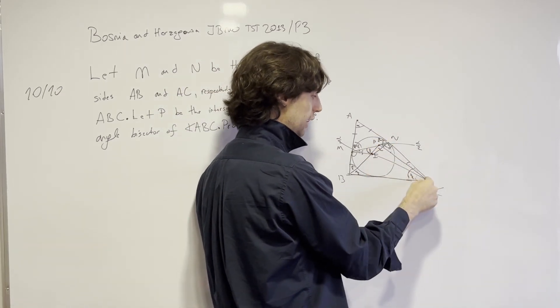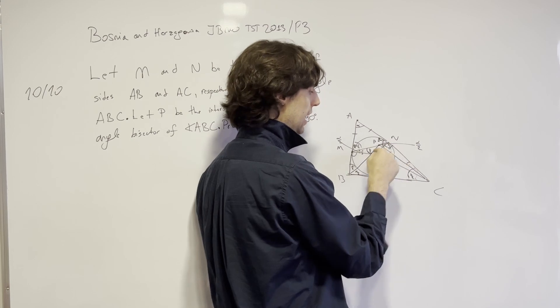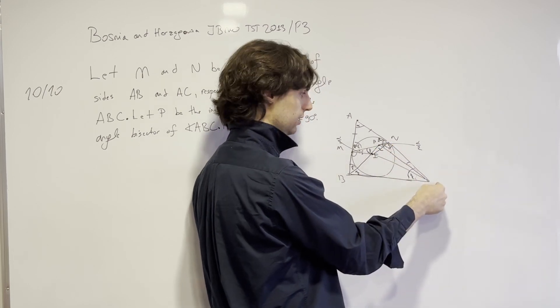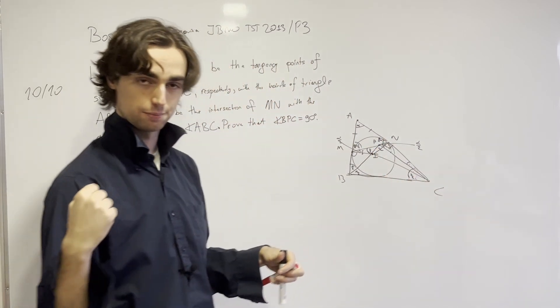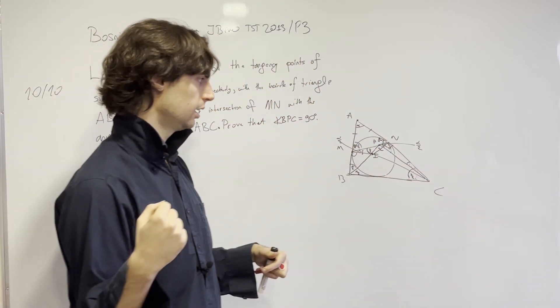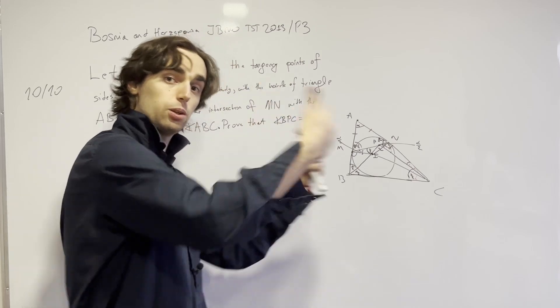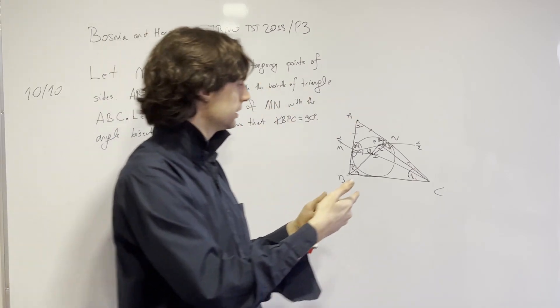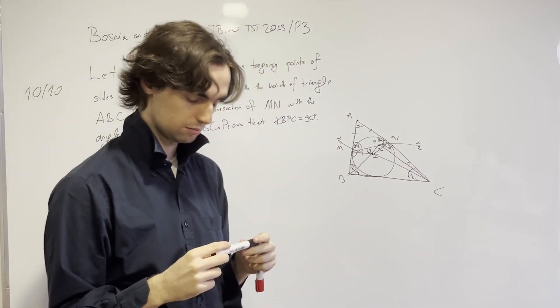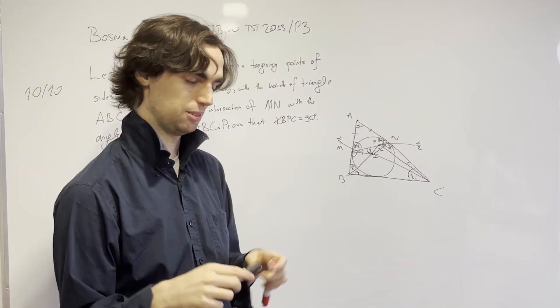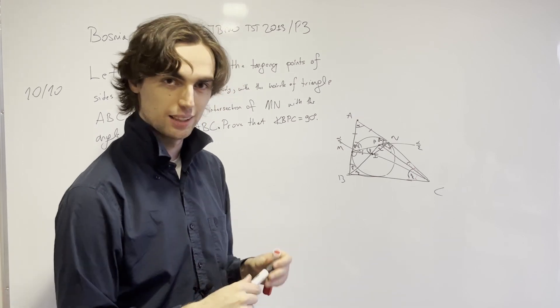If IPC was 90, then we had INC 90 as well, because there's a perpendicular. We'd have I, P, N, and C are concyclic. So now maybe that's going backwards. Now forwards is, do I have that I, P, N, C is concyclic? Pause here for the next 15 minutes and try to prove that.